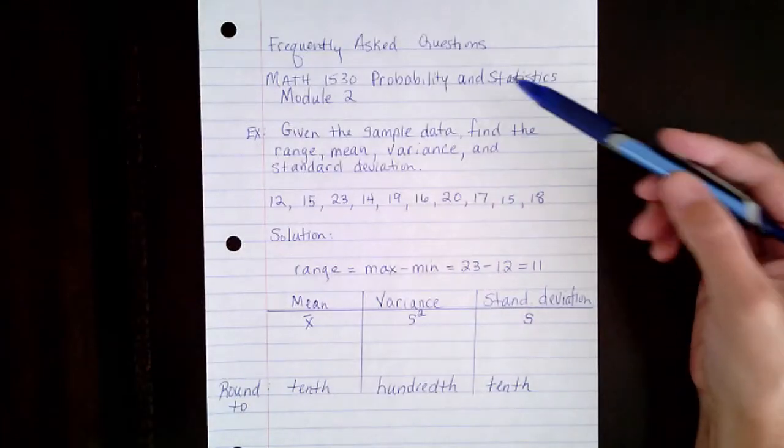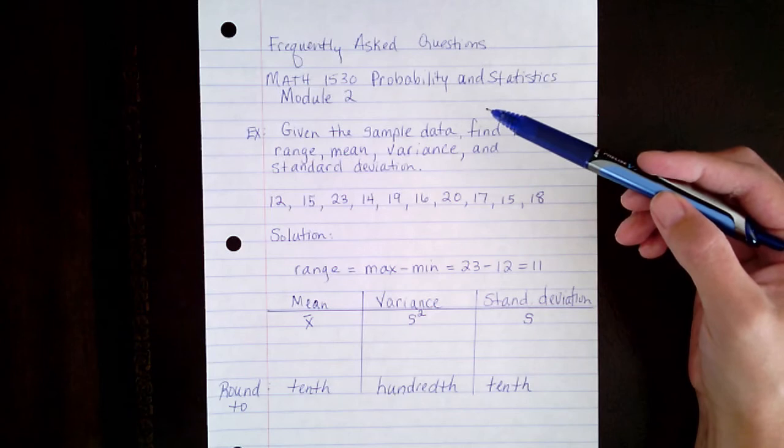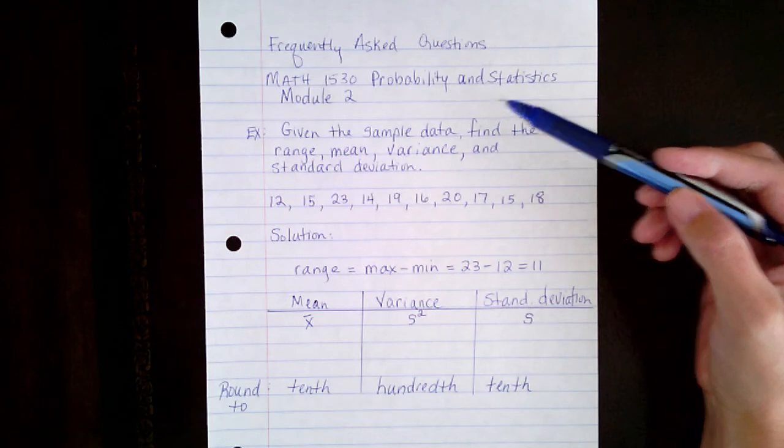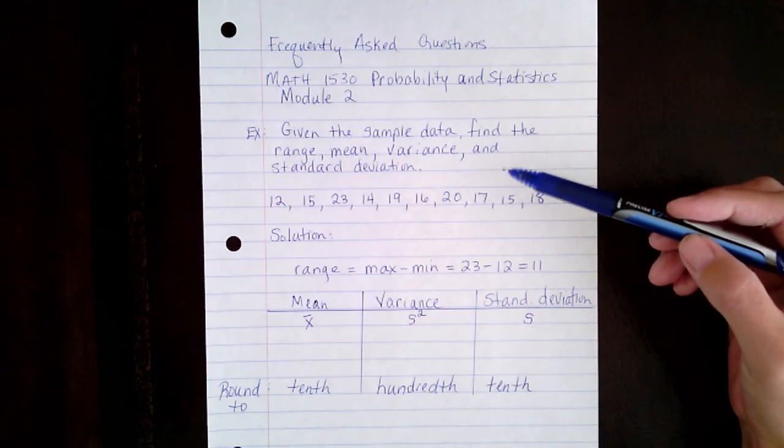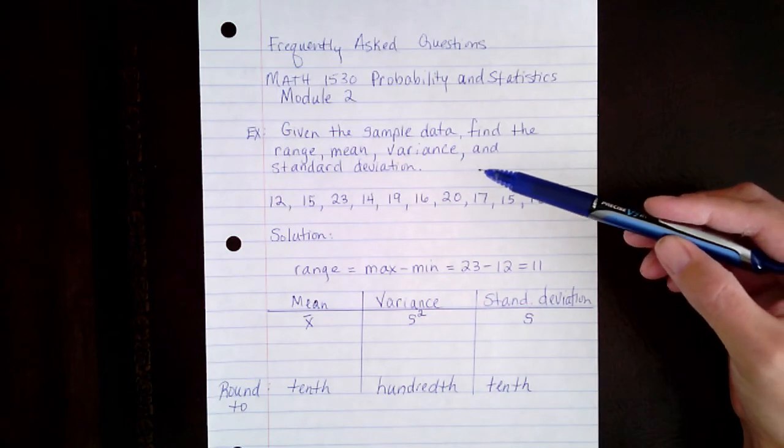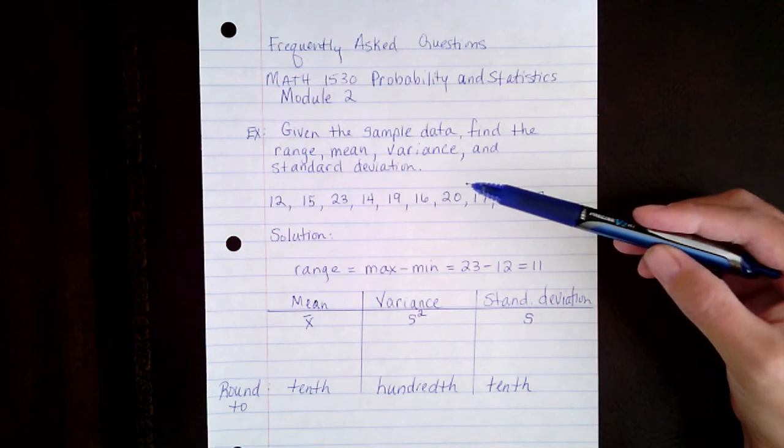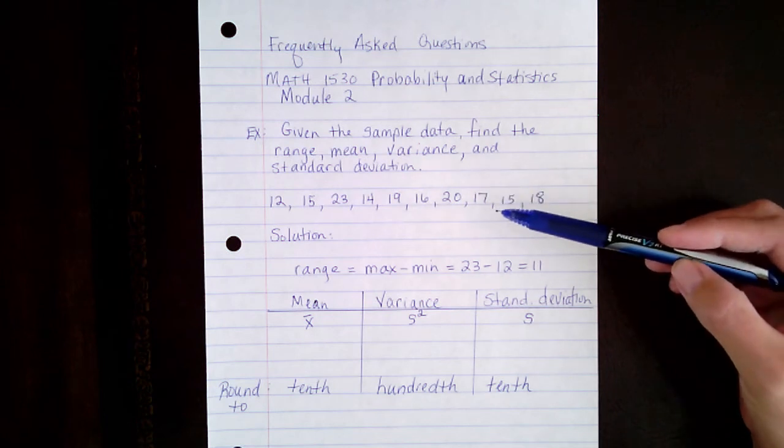Here is a frequently asked question in module 2 of your probability and statistics course. Given the sample data, find the range, the mean, the variance, and the standard deviation. Here is the sample data that we're given.